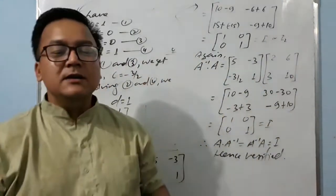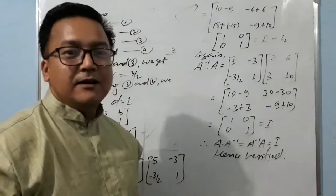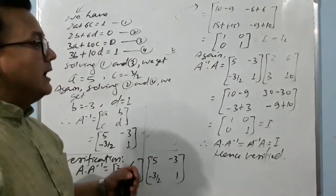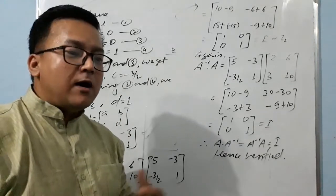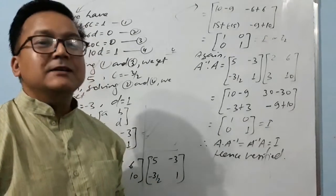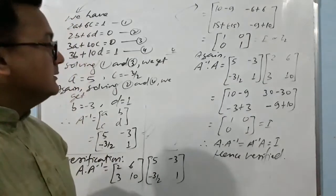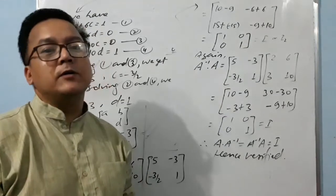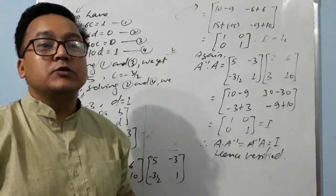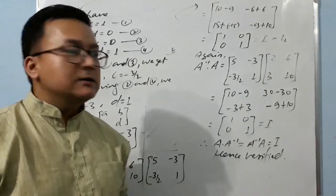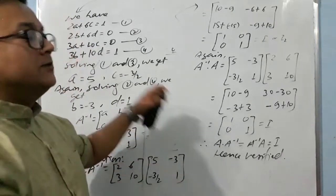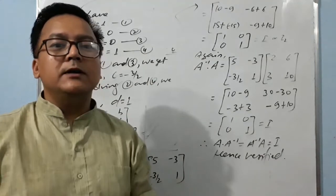This is the method to find the inverse with the help of the definition. Now you are absolutely clear how to find the inverse of a given matrix using the definition. In the next video, I will tell you how to find the inverse using a formula. With the help of the inverse formula, we can find the inverse of any non-singular square matrix very easily. This definition method is the actual method from which we will derive the formula.